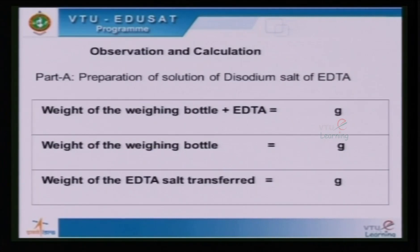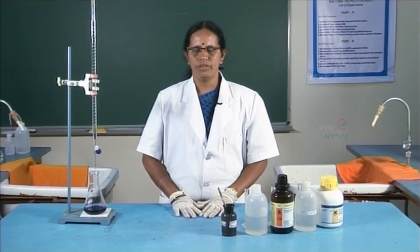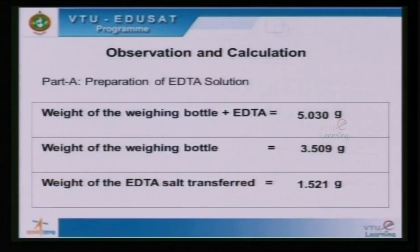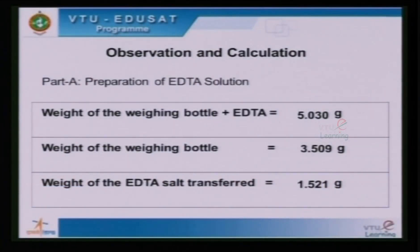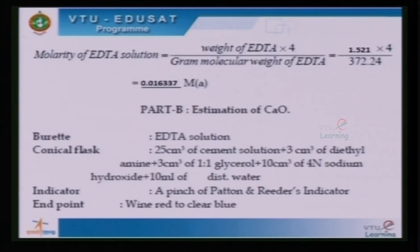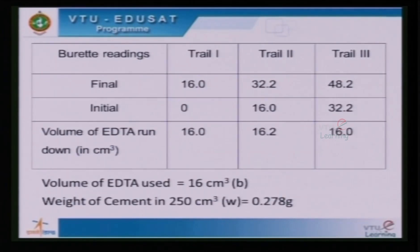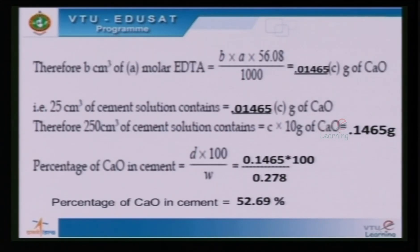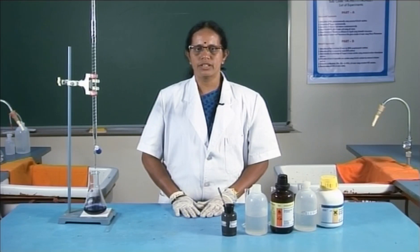The calculations and observations: for the preparation of EDTA solution, the weight of sample transferred is 1.521 grams. The molarity of EDTA solution calculated is 0.016337 molar. The results are tabulated — the volume of EDTA used is 16 cm³. The percentage of calcium oxide in the given sample is 52.69%.